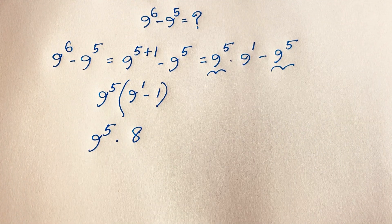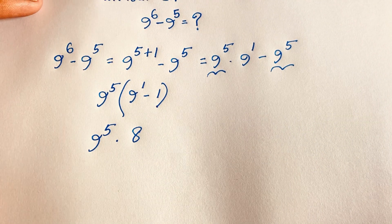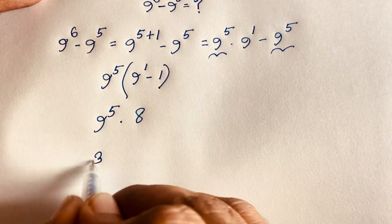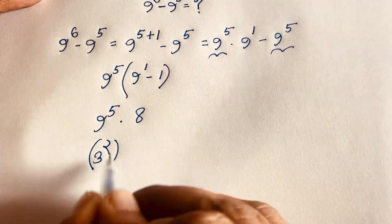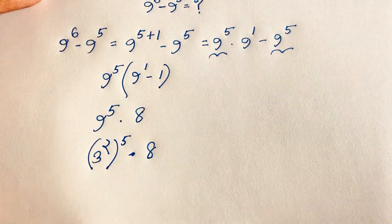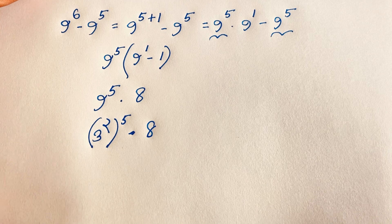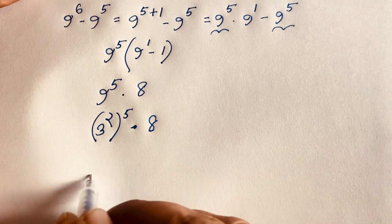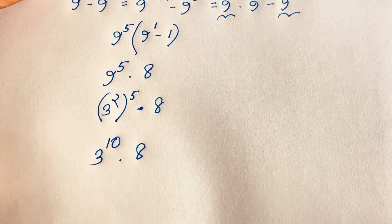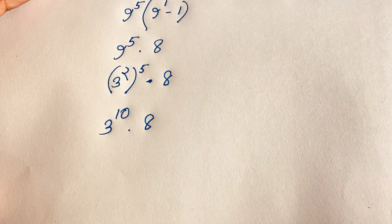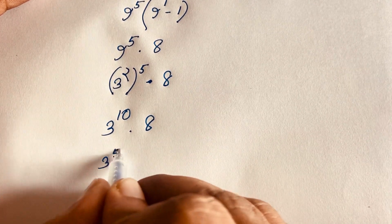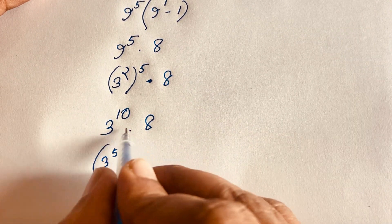Now 9 to the power 5 can be written as 3 to the power 2, all to the power 5, since 3 squared equals 9. So the exponent becomes 2 times 5. It is 3 to the power 10, times 8. We know that 3 to the power 10 equals 3 to the power 5, squared — since 2 times 5 equals 10.